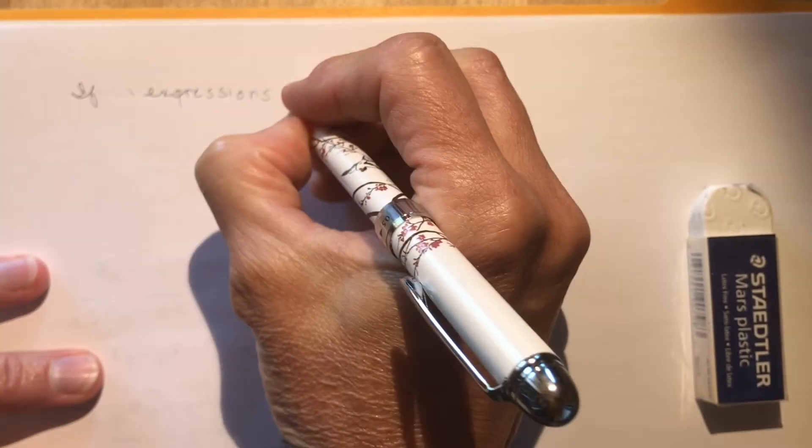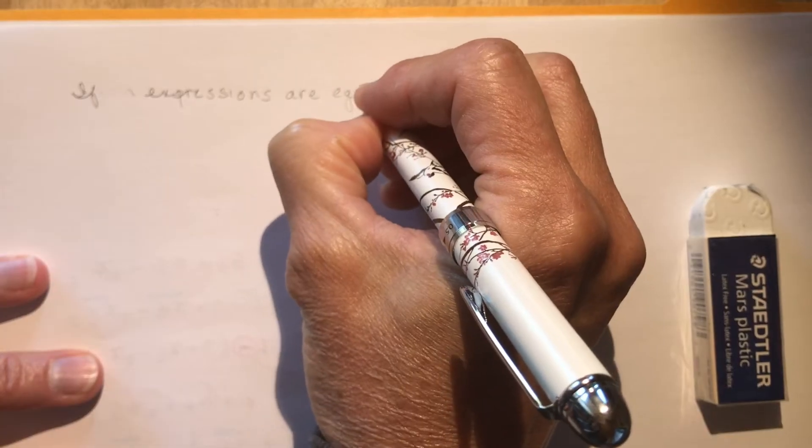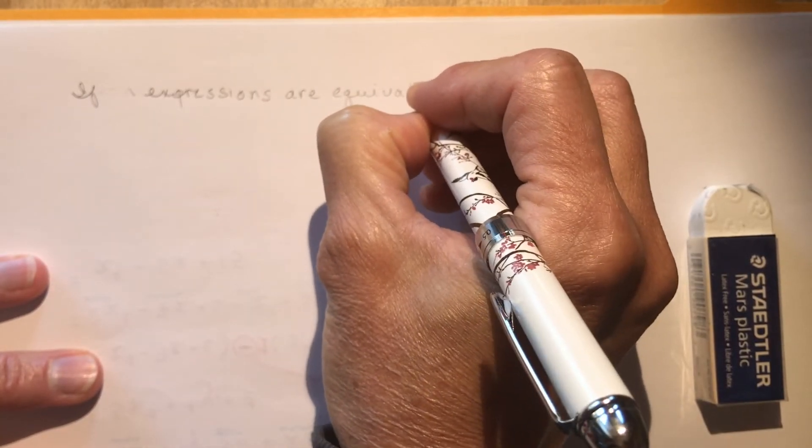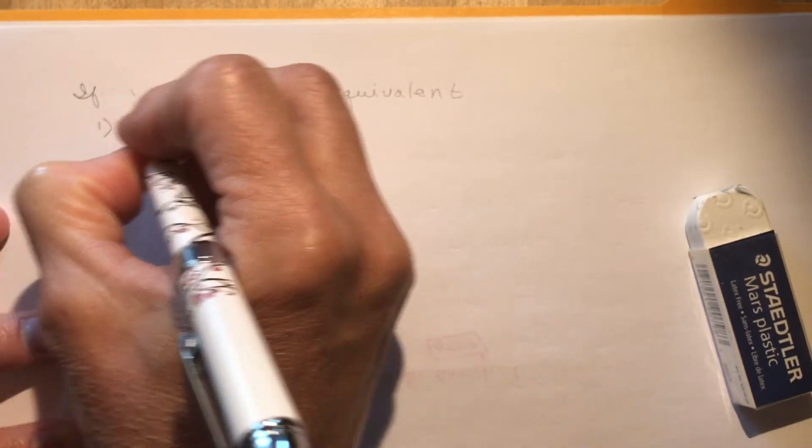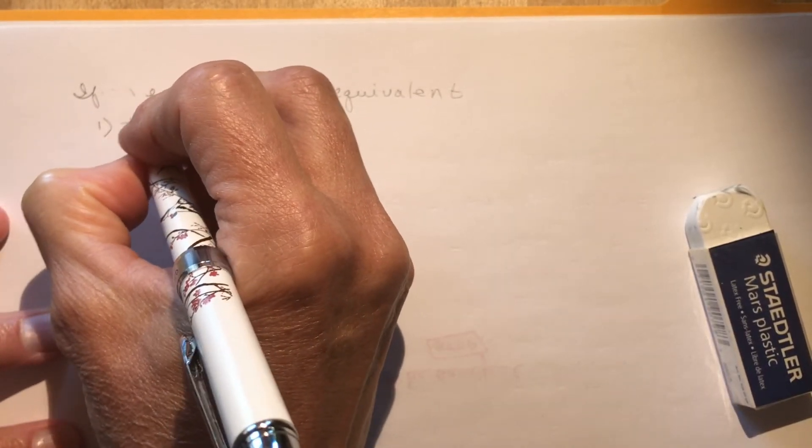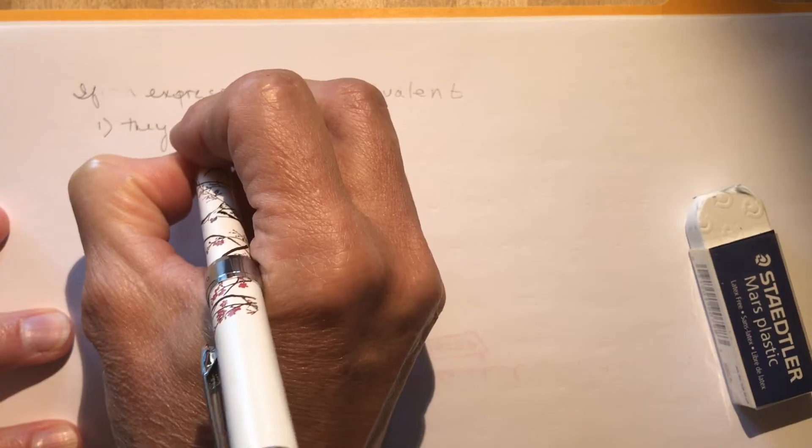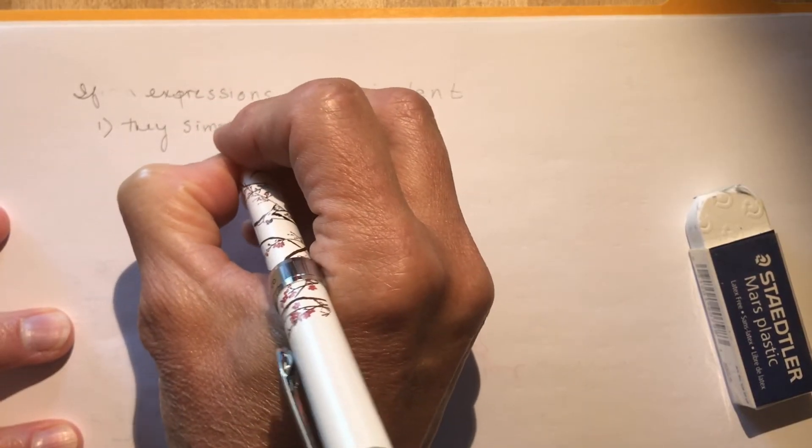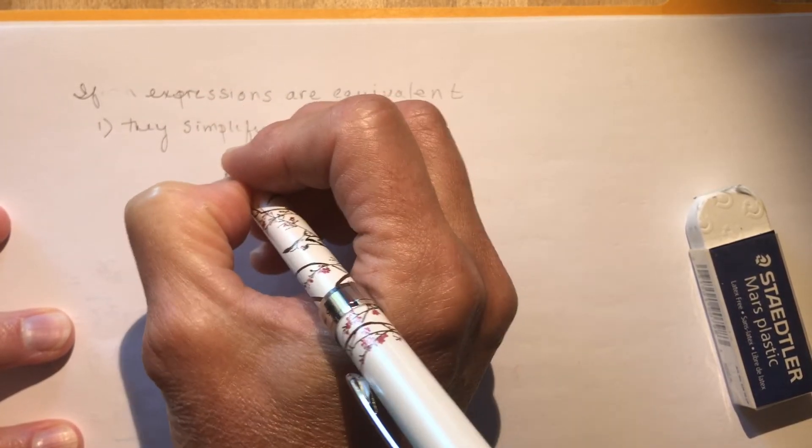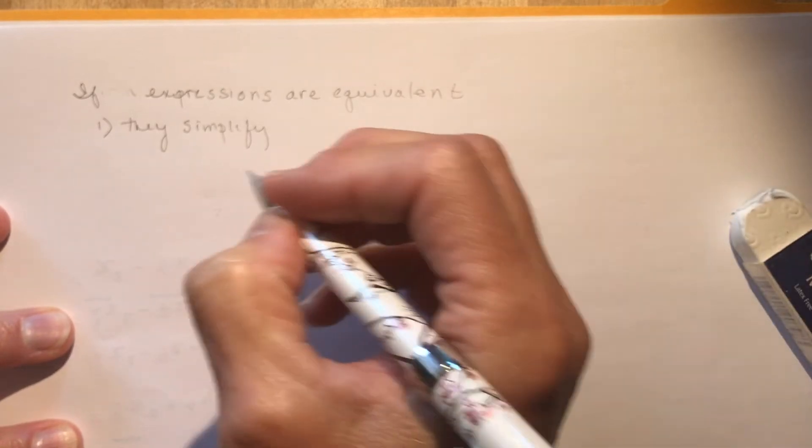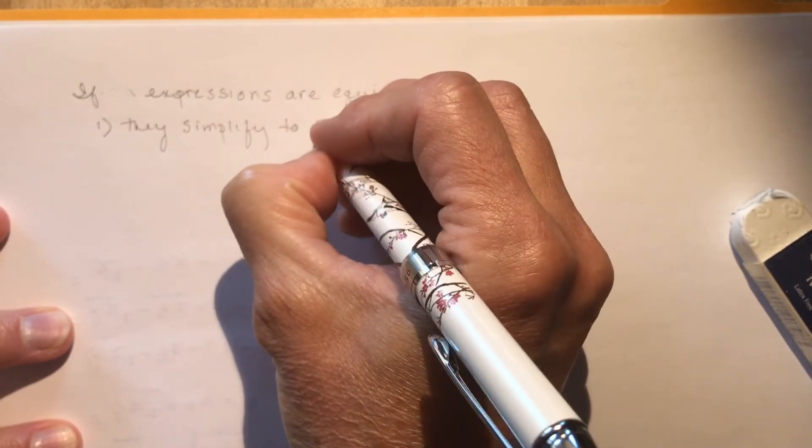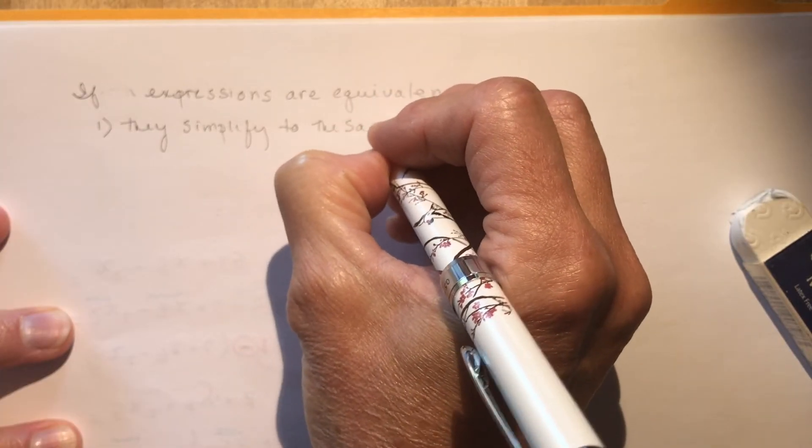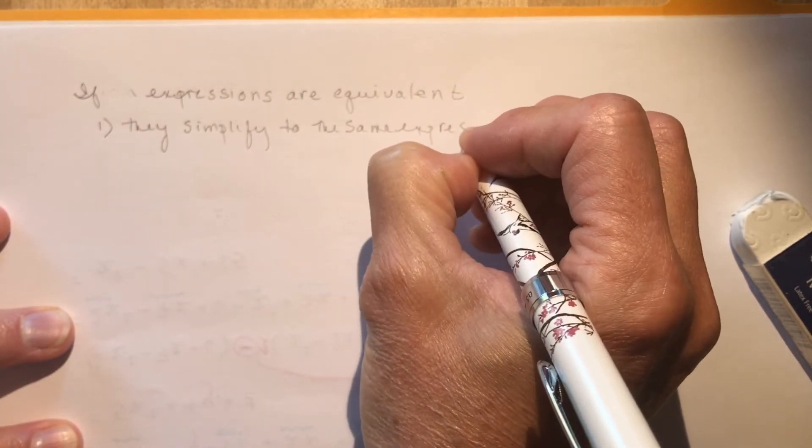If expressions are equivalent, there's three things that can happen. One, they simplify to the same expression. So you might be asked, you know, something that doesn't look at all like the other thing until you do the expanding or adding and subtracting. And lo and behold, they are the same. They simplify to the same expression.